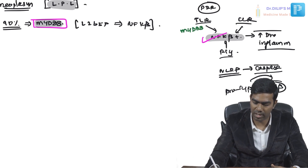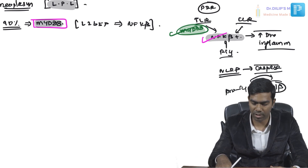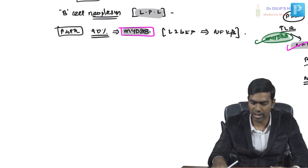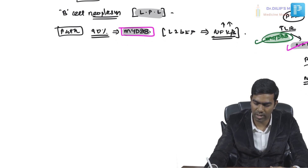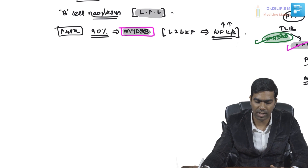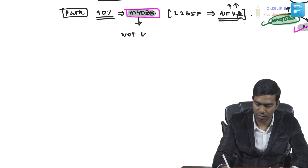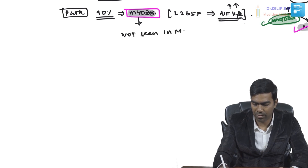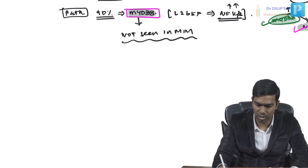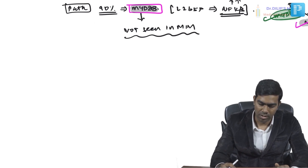TLRs depend on the important adapter MYD88. That is why MYD88 mutations increase NF-κB activation in Waldenström's patients. Importantly, MYD88 mutations are not a feature of multiple myeloma — this is a critical distinguishing point.